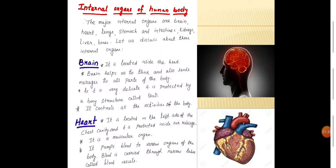Now we are going to learn about internal organs of the human body. The major internal organs are brain, heart, lungs, stomach and intestines, kidneys, liver, and bones. We will discuss one by one in brief.